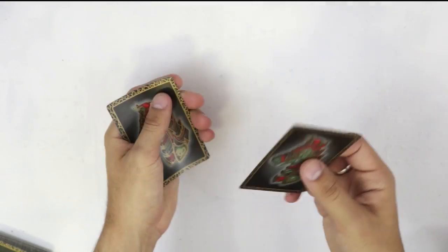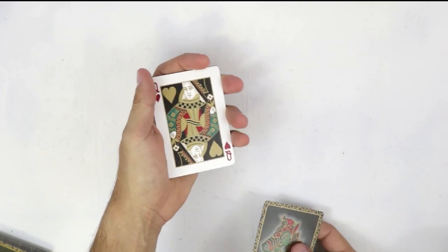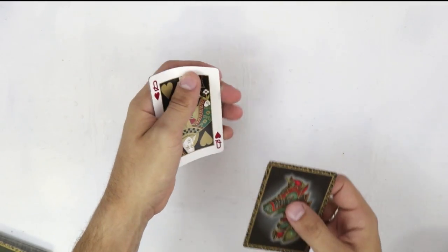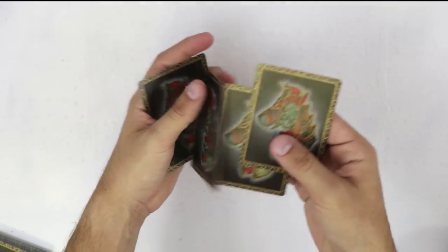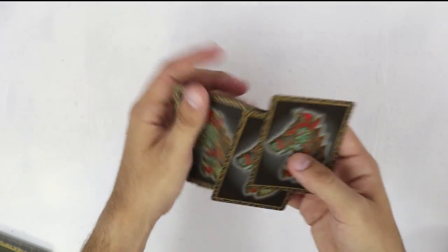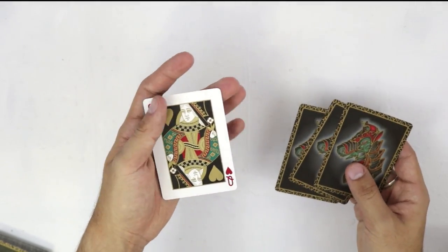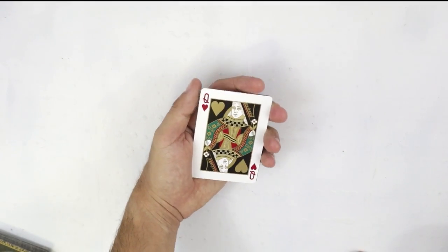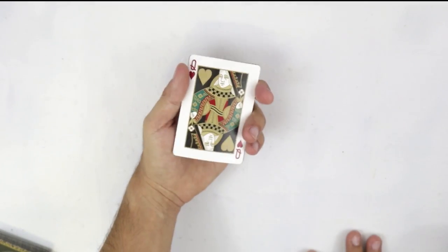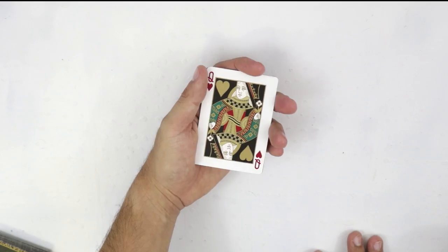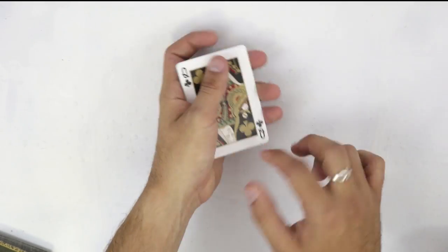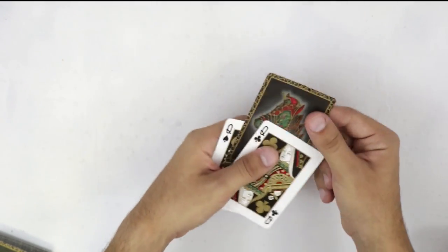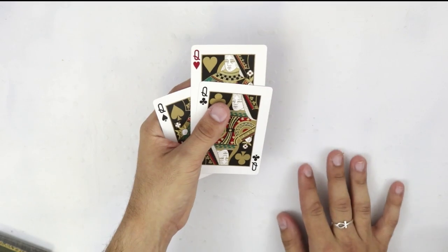But you know what, here's a problem. It could also be this one, it could also be this card. It could also very well be this card or you know what it could also be even this card right here. So it could be any one of those queens at all. But you know what, because I'm a magician I'll make it easier to find out which queen is yours because I'll just do one of these and it turns out that all these cards are queens.